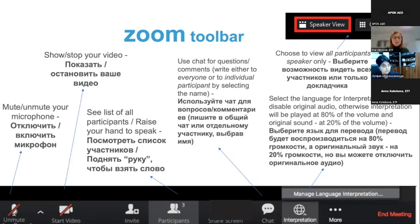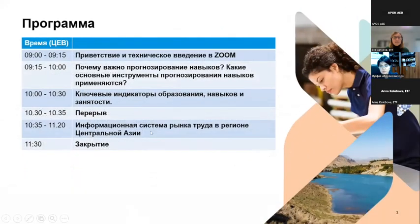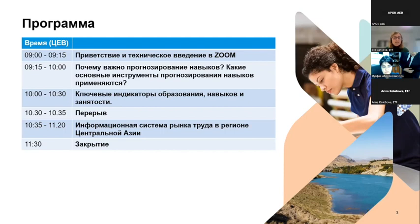The goal is to provide the review of the key tools which we can use in order to do skills forecasting. These are the tools which are used in the EU, and also to see what is the progress with the monitoring of the labour market in Central Asian countries. We shall have two presentations today to be delivered by our colleagues who are labour market experts, and then our colleagues from Central Asian countries will share information about the labour market information system.